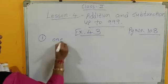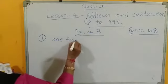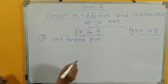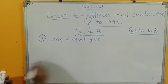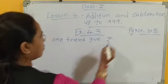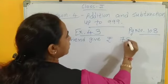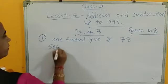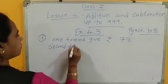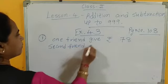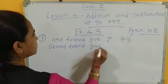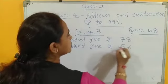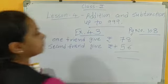So you have to write like this. One friend give rupees, how much? 78. And second friend give rupees, how much? 56. Now, do the total.